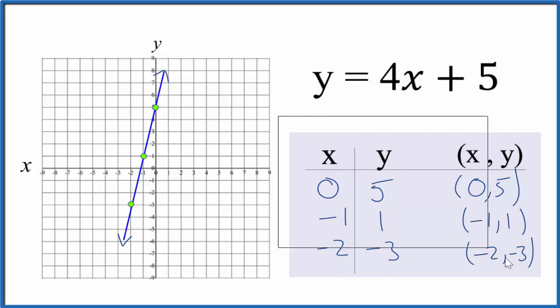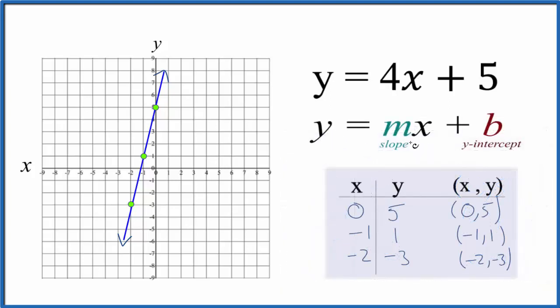Let's check our work with slope-intercept formula. So we have y equals mx plus b. b is the y-intercept. So the y-intercept is where we're going to cross the y-axis, which is right here at 5.